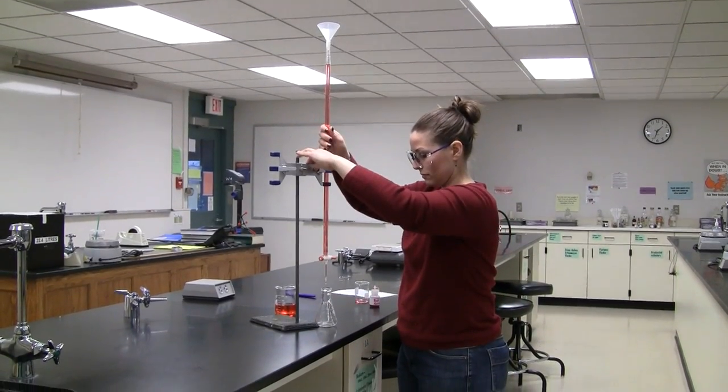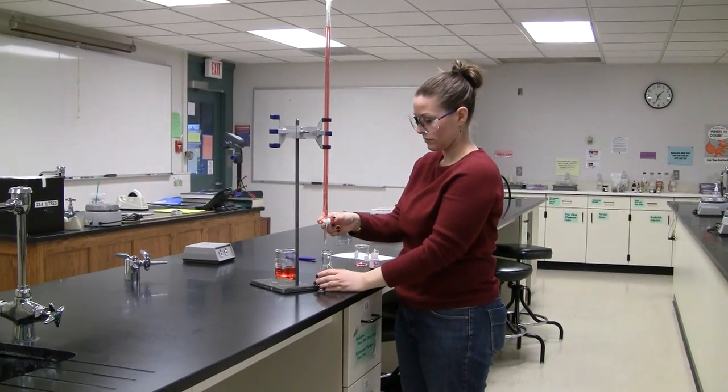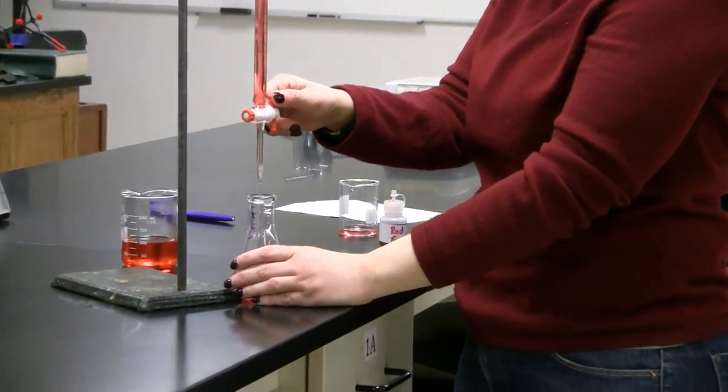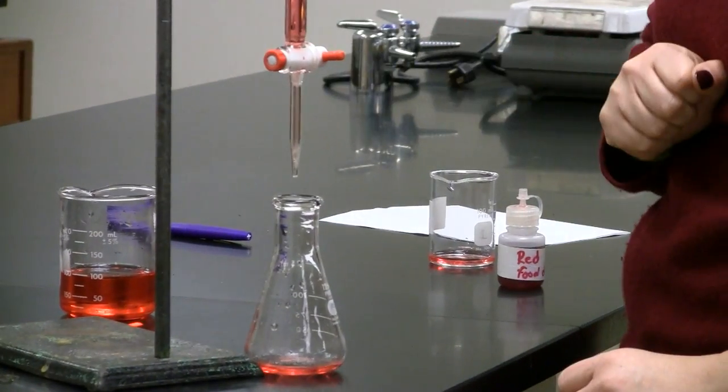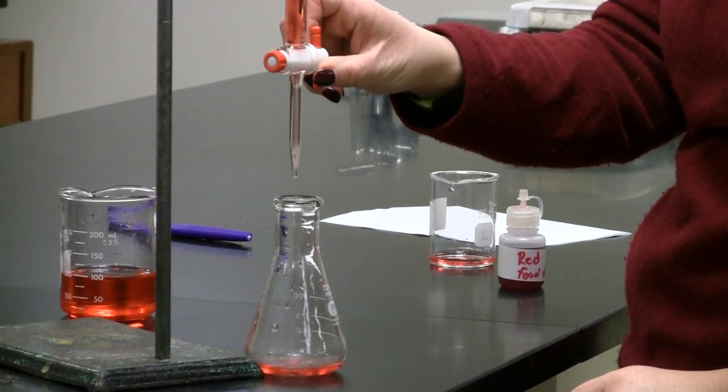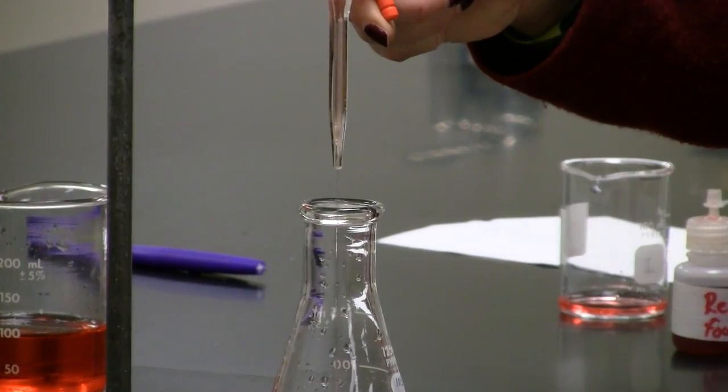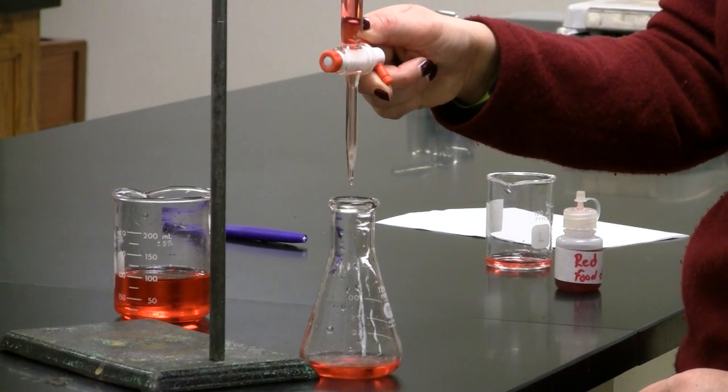The flow of liquid out of a burette is controlled with a stopcock. Turning the stopcock fully perpendicular to the burette stops the flow of liquid. Fully parallel allows maximum flow. By carefully adjusting the stopcock, you can dispense liquid at full speed, more slowly, or even dropwise.